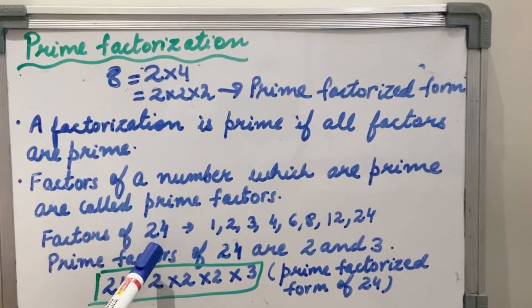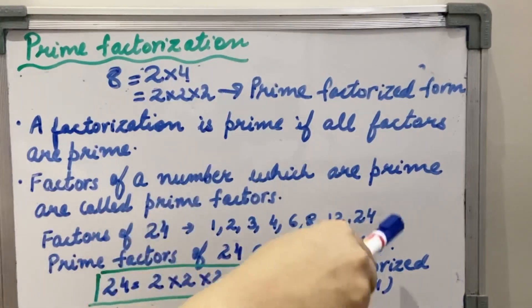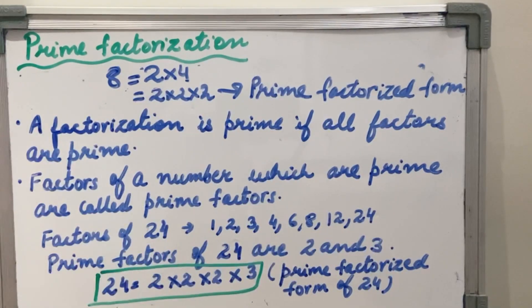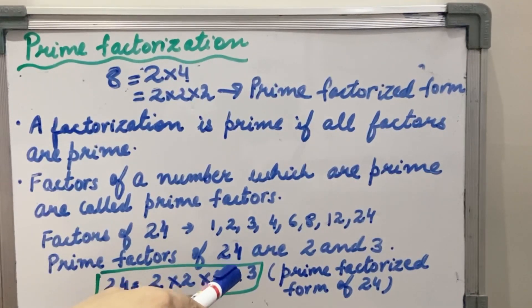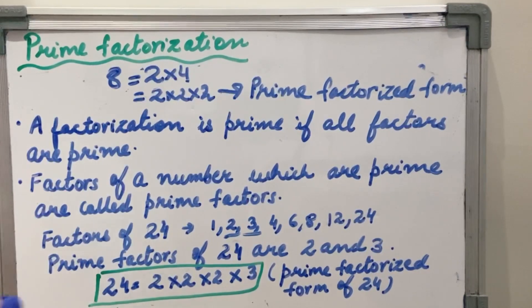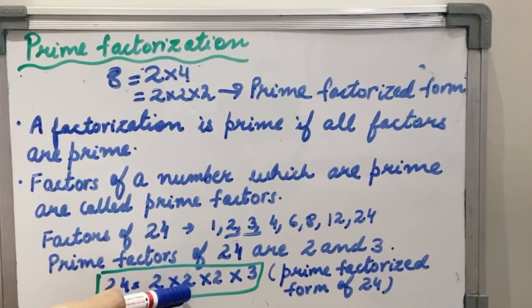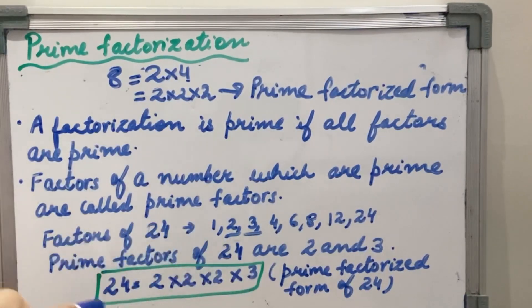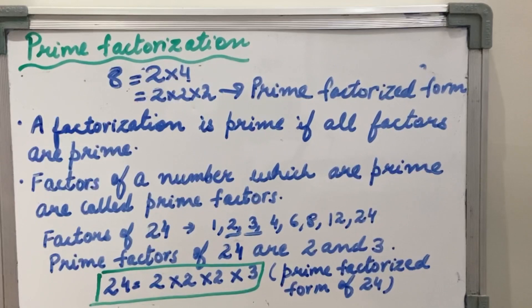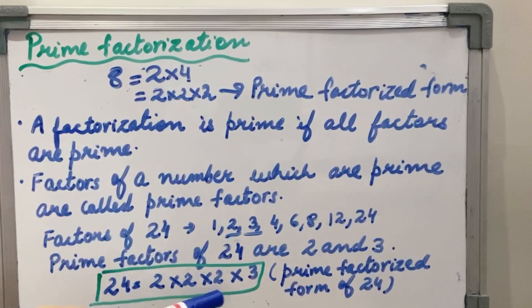Factors of 24 are 1, 2, 3, 4, 6, 8, 12, 24. These all are the factors of 24. Are all the factors prime numbers? No. So what are the prime factors of 24? Prime factors of 24 are 2 and 3. So I have rewritten the factorization of 24 as 2 × 2 × 2 × 2 × 3. This is known as prime factorization — when all the factors are prime numbers. If any factor is composite, we split it further into prime numbers to get the prime factorization.